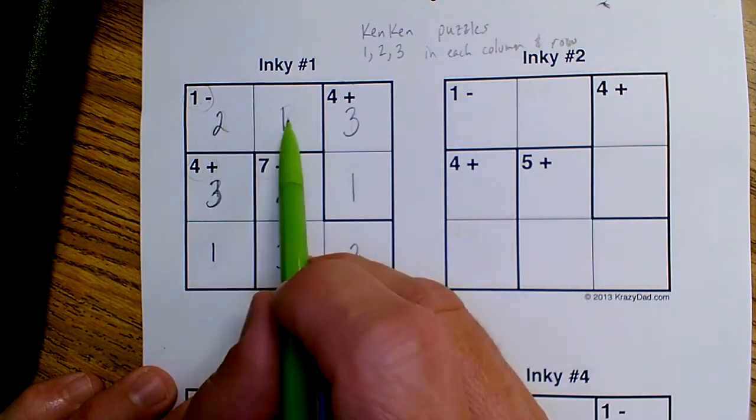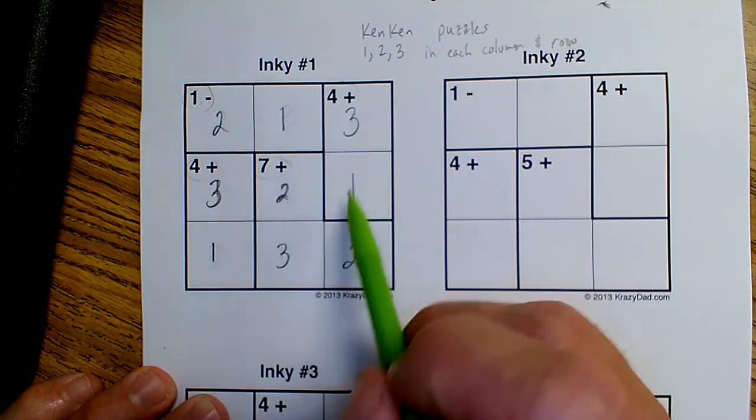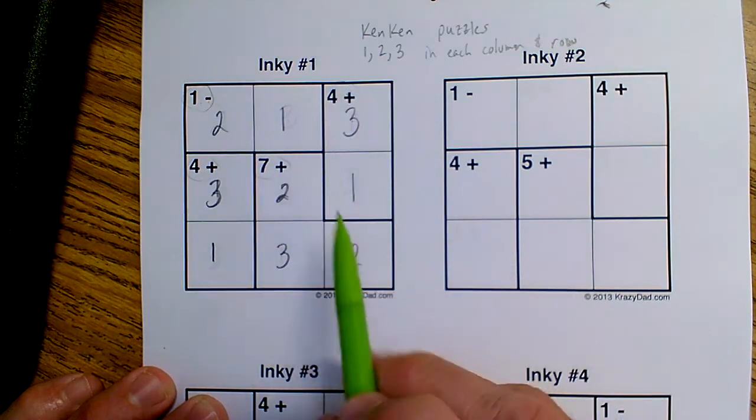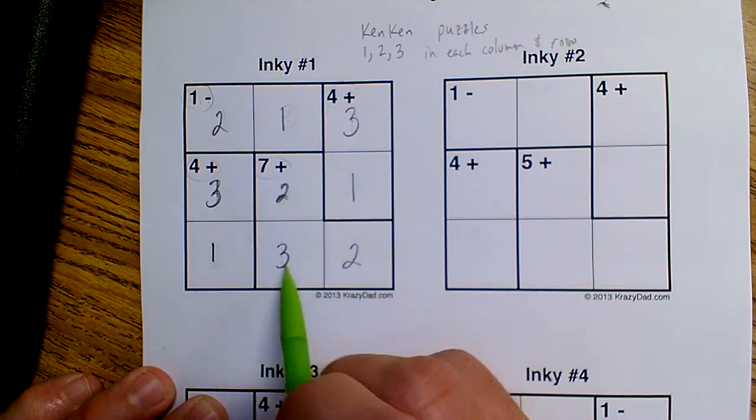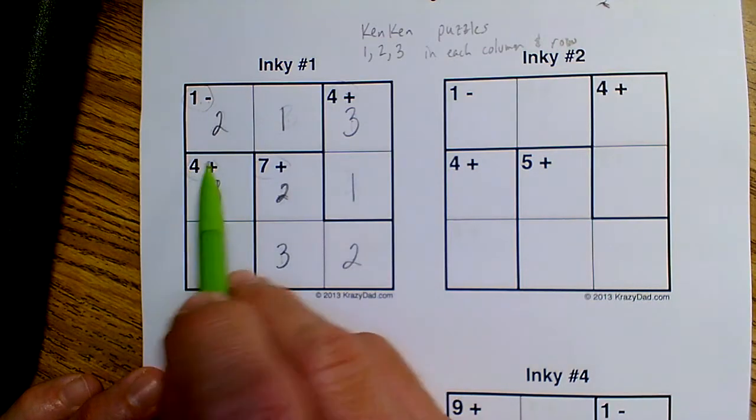So 2 minus 1 is 1. 3 plus 1 is 4. 2 plus 3 is 5, plus 2 is 7. And 3 plus 1 is 4.